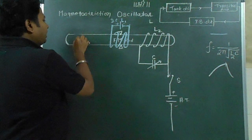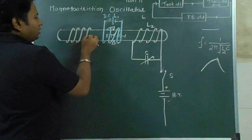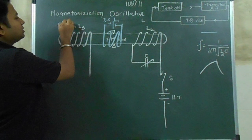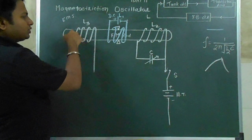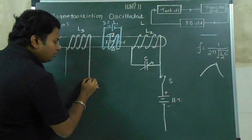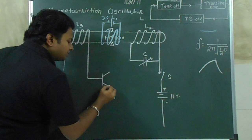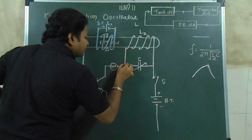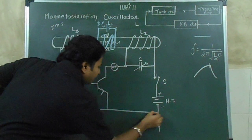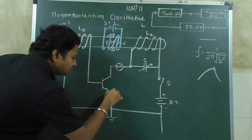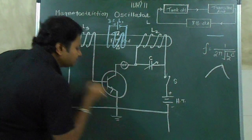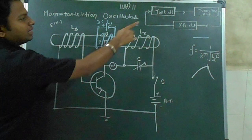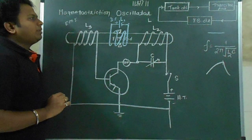At the other end of the rod, one more coil, called L3, is wound. Here, electromagnetic induction is observed — the coil is at rest while the rod is vibrating — so an induced EMF and induced current are generated. This induced current is given to the base of an NPN transistor. The output of the transistor is fed back to the tank circuit, with the emitter grounded so excess current does not harm the transistor. This transistor acts as the transistor amplifier, and coil L3 acts as the feedback circuit. This is how the Magnetostriction Oscillator works.